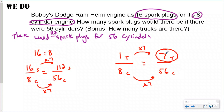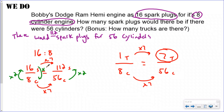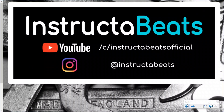Bonus question: what is the rate? These are all equivalent ratios, so they should all have the same rate. Going from cylinders to spark plugs is times two. Going the opposite way — from spark plugs to cylinders — is times one-half, which is the same for all equivalent ratios. Equivalent ratios are a lot like equivalent fractions.